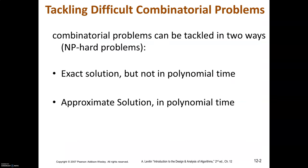In this video we'll see how to solve combinatorial problems. Combinatorial problems can be solved in two ways: one with polynomial runtime, and the other not in polynomial time. If you want to find the solution in polynomial time, there is no guarantee that you will get the exact solution — it is approximate. If you want to find the exact solution, you cannot achieve polynomial runtime.